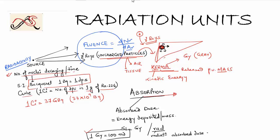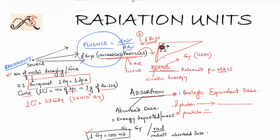There is another important concept called the biologic equivalent dose, or equivalent dose. Not all radiations cause the same amount of damage. A gamma photon travels a longer distance and deposits its energy over a larger area, whereas an alpha particle travels a very short distance and deposits its entire energy into a small area. To account for this, biologic equivalent dose H equals absorbed dose multiplied by a quality factor.